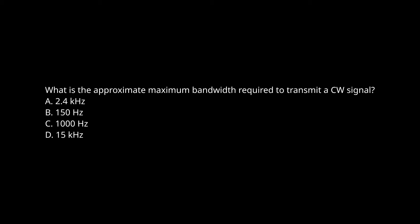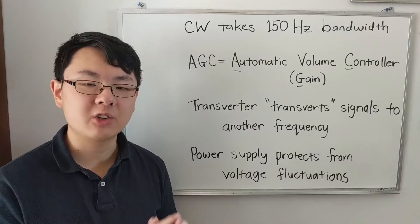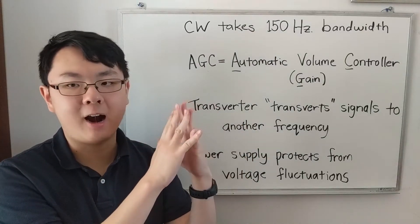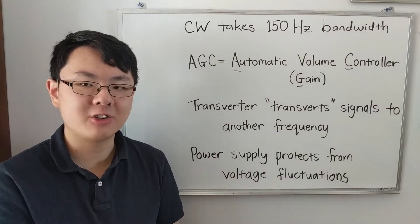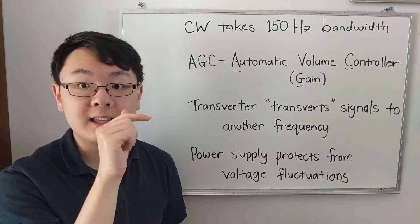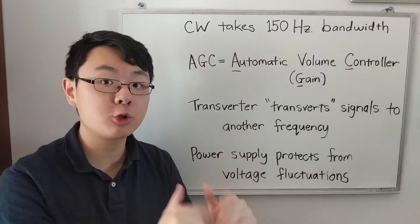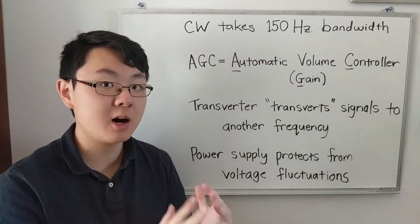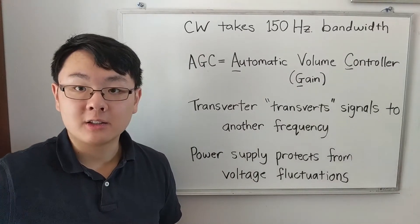As we learned in the last video, CW or Morse code takes up a very small amount of space on the air, so bandwidth is very small, because the only information it needs to transmit are little beeps. Here's the trick: looking at the answer choices, B has the smallest bandwidth — 150 Hz. The smallest choice for the mode that has the smallest bandwidth. Just remember that and you'll be golden on the test.